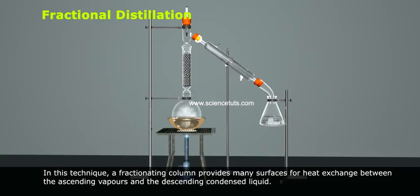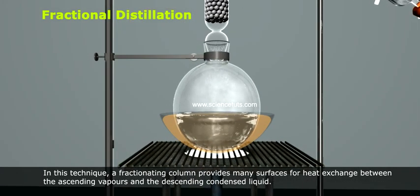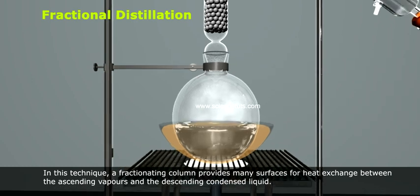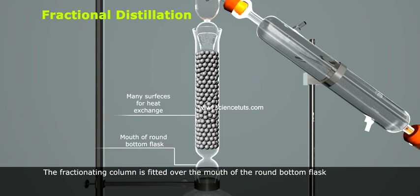In this technique, a fractionating column provides many surfaces for heat exchange between the ascending vapors and the descending condensed liquid. The fractionating column is fitted over the mouth of the round bottom flask.